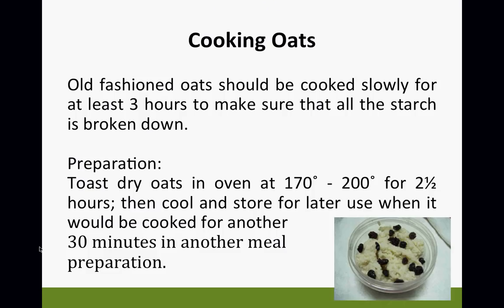For cooking oats: old-fashioned oats should be cooked slowly for at least three hours to ensure all the starch is broken down. Toast the dry oats in the oven at 170 to 200 degrees for two and a half hours, then cool and store for later use. When cooked for another 30 minutes in a meal preparation, that makes up the three hours. If you won't cook it for the additional 30 minutes, then toast for the full three hours.